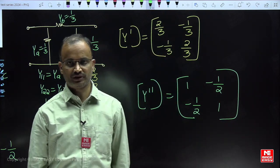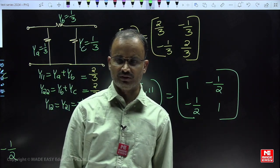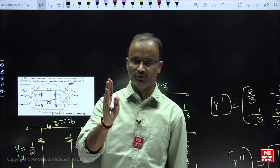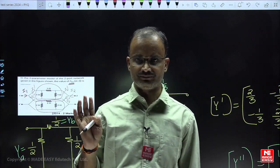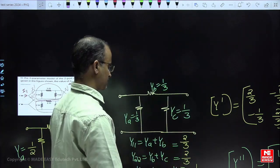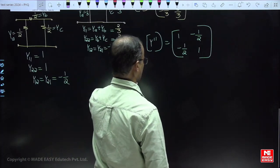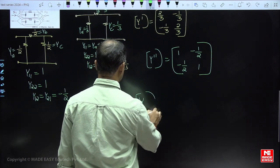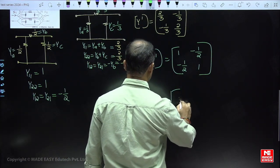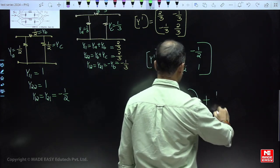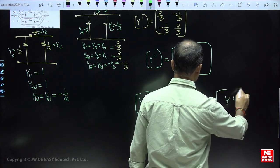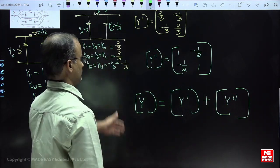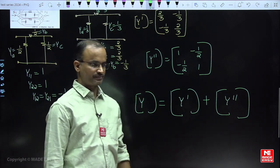Y parameters for the first and second two-port networks are both known. Since the two networks are in parallel, the equivalent Y matrix equals Y1 plus Y2. That means the equivalent Y parameters equal the sum of the two admittance matrices. Adding the respective values gives us the equivalent Y parameters.